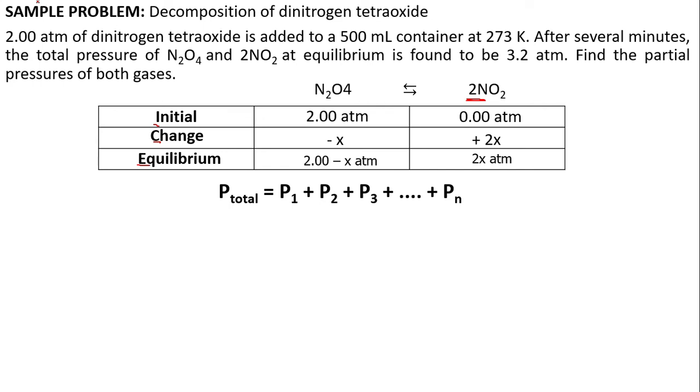Now you have the law of partial pressure. P total equals P1 plus P2 plus P3. In this case, P total equals P N2O4 plus P 2NO2. Just insert the given, the equilibrium. P total is 3.2 atmospheres. It's equal to the pressure of N2O4, which is 2 minus x, plus the pressure of 2NO2, which is 2x. Now let's solve for x. That will be 1.2 atmospheres.